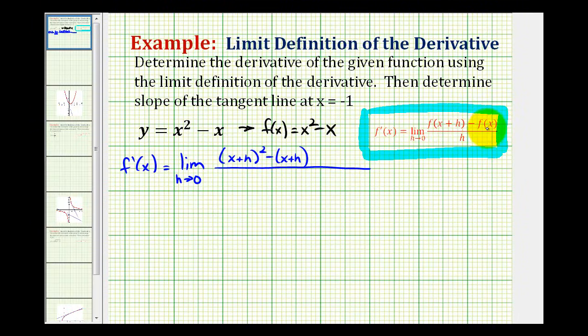And now we have to subtract f of x. We have to be careful here because we have to subtract the entire function. So we'll have the quantity x squared minus x. If we leave off these parentheses, it would not be correct. We divide all of this by h.